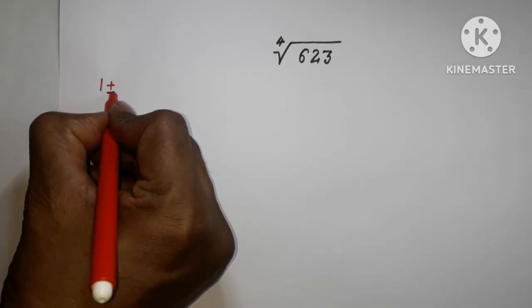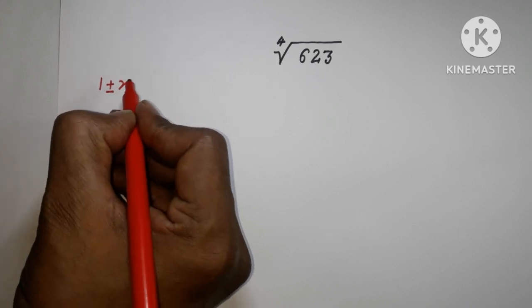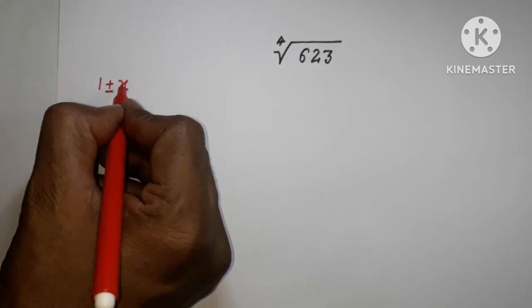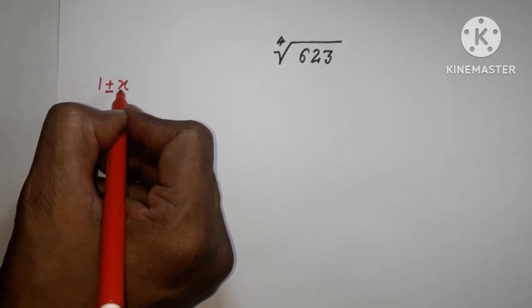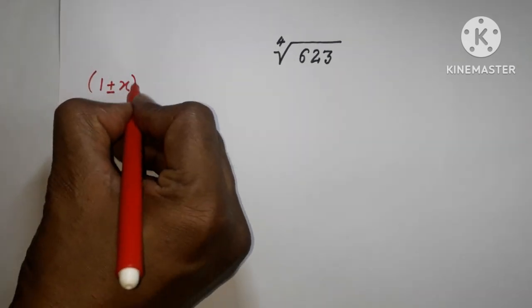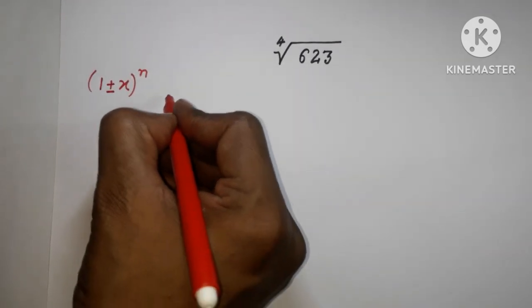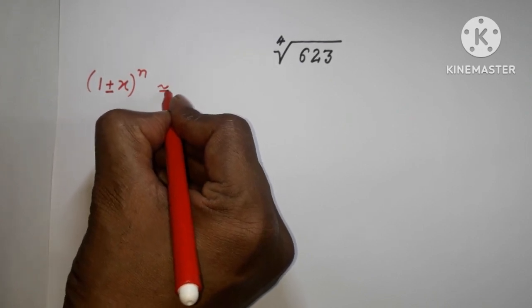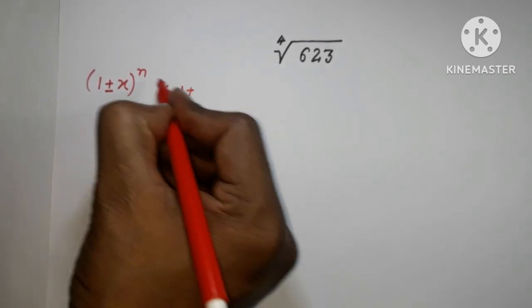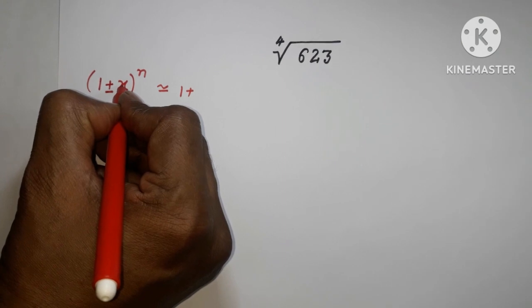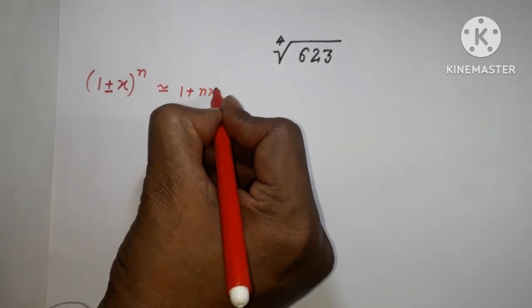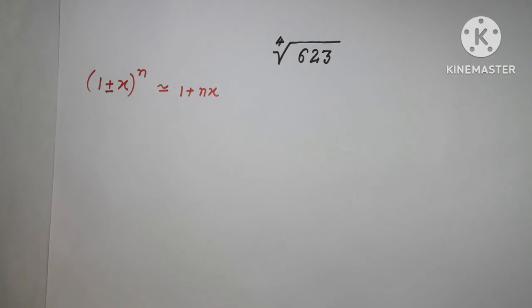Here, x can be positive or negative, and |x| is less than or equal to 1. I'm making one condition here: this exponent n and x will multiply together, giving nx. So (1+x)^n ≈ 1+nx.